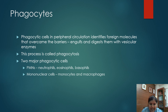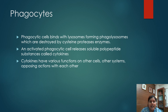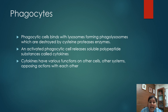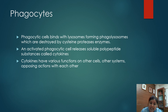There are two major phagocytic cells. The first group is the polymorphonuclear cells — that is neutrophils, eosinophils, and basophils. The second major group is the mononuclear cells — monocytes and macrophages. These phagocytic cells bind with lysosomes present inside, forming phagolysosomes, which are further destroyed by cysteine protease enzymes. An activated phagocytic cell releases soluble polypeptide substances known as cytokines. Cytokines have various functions on other cells and systems, and have opposing actions with each other as well.